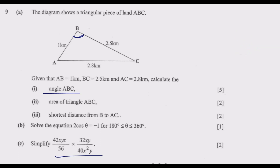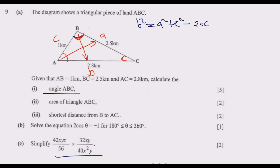To use the cosine rule, we first label the sides with small letters. The side opposite angle B is b, and the other sides are a and c. Based on the cosine rule: b² = a² + c² - 2ac·cos(ABC). The angle we are looking for is angle ABC, and we know the value of b is 2.8.